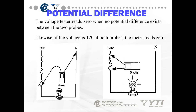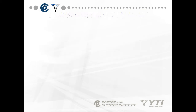If a voltage tester reads zero, it means no potential difference exists between the two probes. Likewise, if the voltage is 120 at both probes, the meter reads zero. There has to be a potential difference.